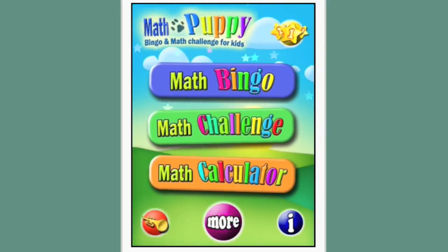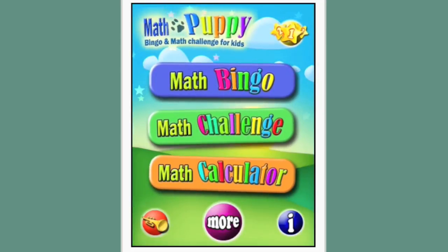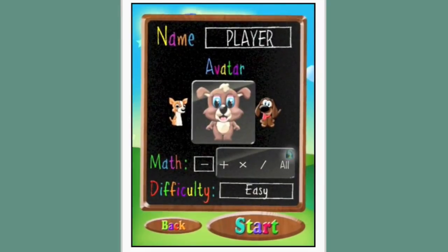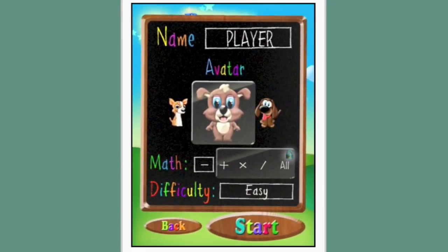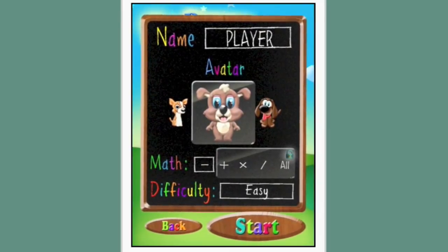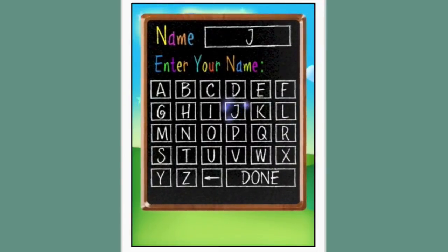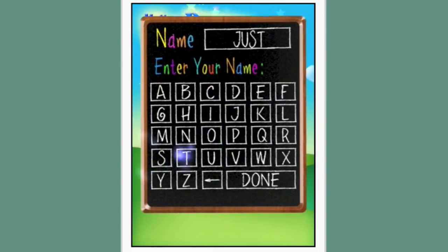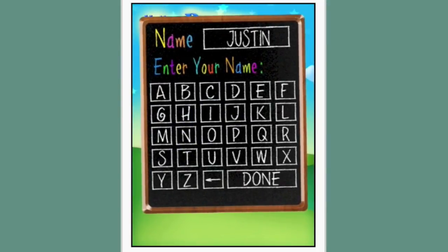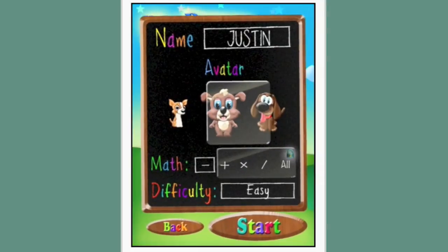The main game of the app is playing bingo. First, let's create our avatar. We'll select our puppy, and we'll get started.